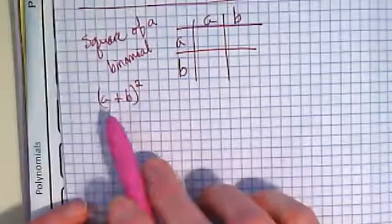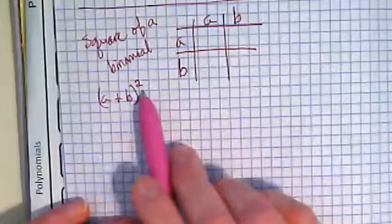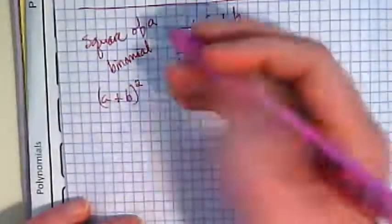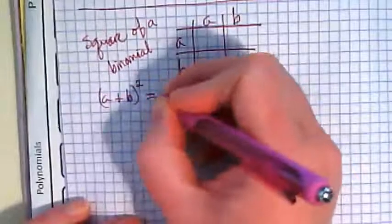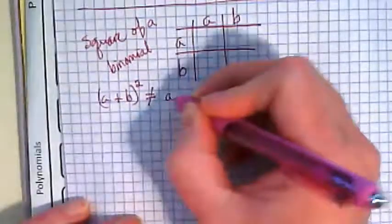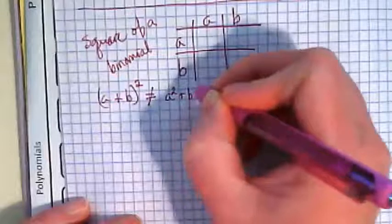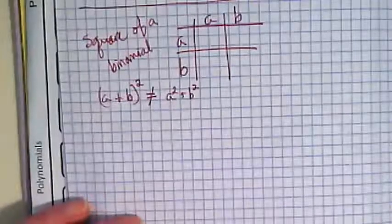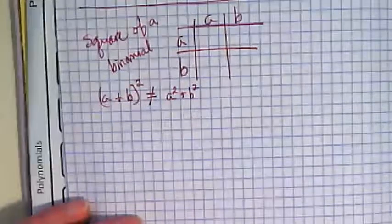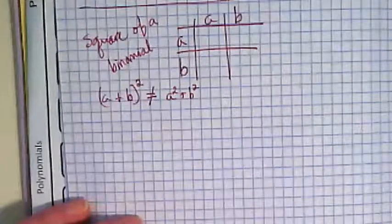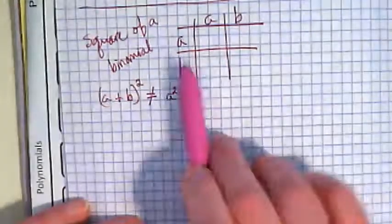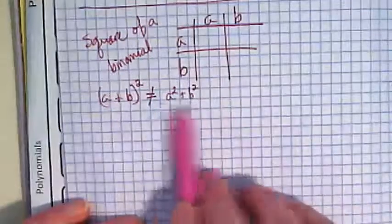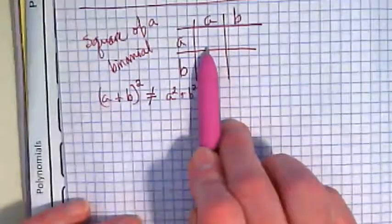If I take (a + b)², the mistake I often see is people just saying a² + b². They take that square and they share it with those two instead of actually taking the binomial and multiplying it by itself. That's what's happening up here. So this is not true. What we're going to put in here is true.